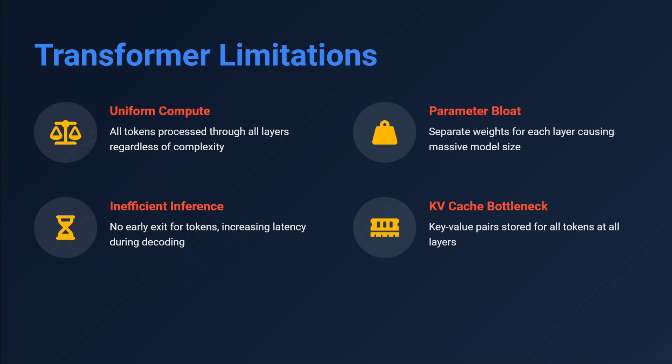Parameter bloat: separate weights are used for each layer. In transformers the architecture is huge, which leads to massive models. There's also inefficient inference and a KV cache bottleneck, because we are storing separate weights for each layer, and key-value pairs are stored for all tokens at all layers.